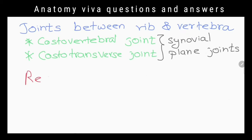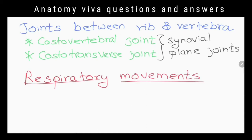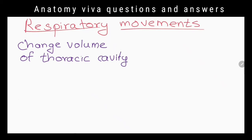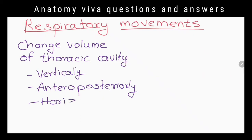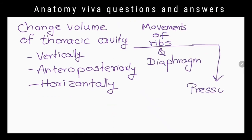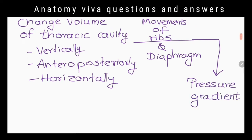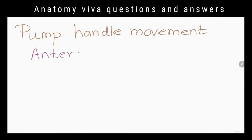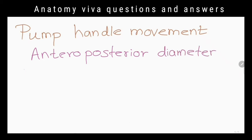What do you know about respiratory movements? They change the volume of the thoracic cavity, which then increases or decreases the volume of the lungs to create the pressure gradient needed to move air in and out of the lungs. These movements change the capacity of the thoracic cavity vertically, anteroposteriorly, and horizontally by movements of ribs and diaphragm.